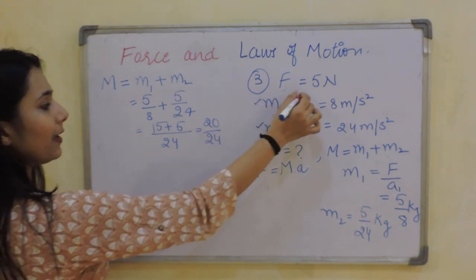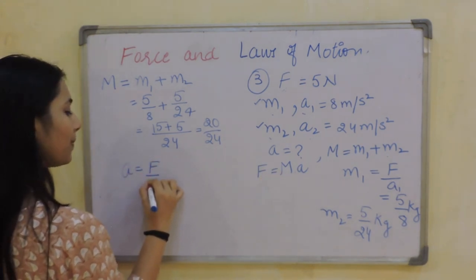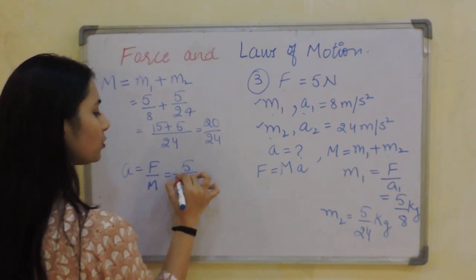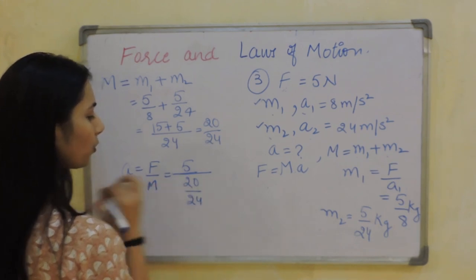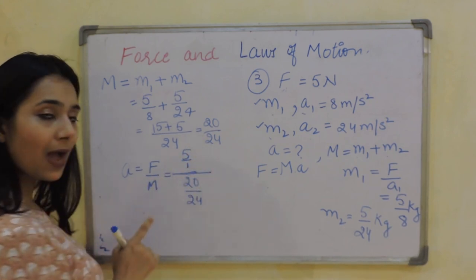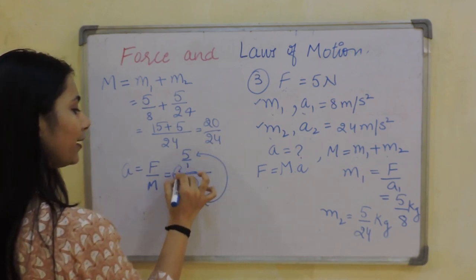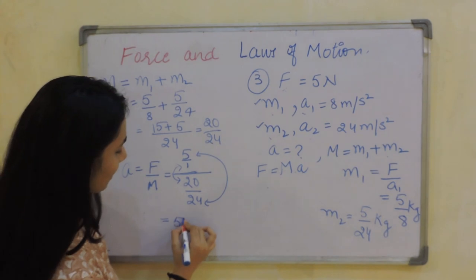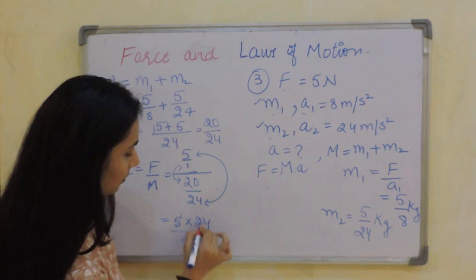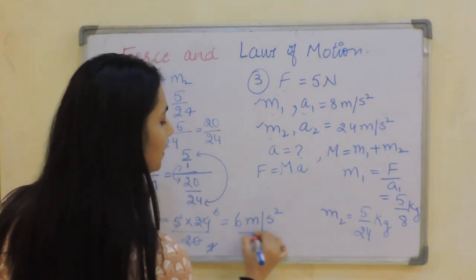Now putting the equation: F is 5, A equals F divided by M, so A equals 5 divided by 20/24. Writing 5 as 5/1, we multiply the extremes and the inward terms, giving 5 times 24 divided by 20. Simplifying: 5 fours are 20 and 4 sixes are 24, giving the answer as 6 m/s².